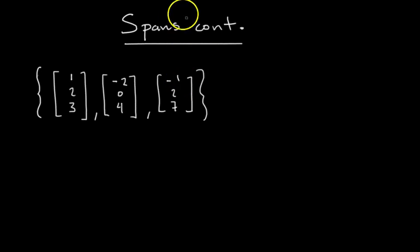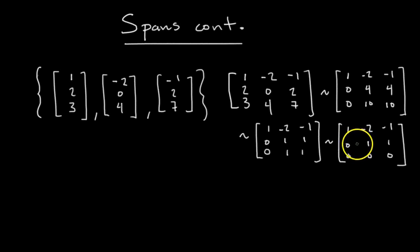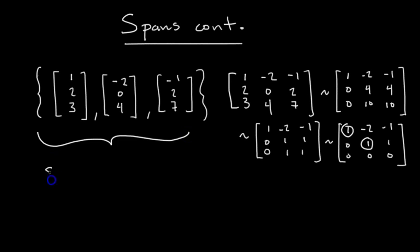So let's do that. Let's put these three vectors into a matrix and then see how many pivots we get. I've row reduced all the way down to row echelon form — remember you only have to go to row echelon form to determine how many pivots you have. You can see the first non-zero entry in each row. We only have two pivots, so the span of this set of vectors is a plane.